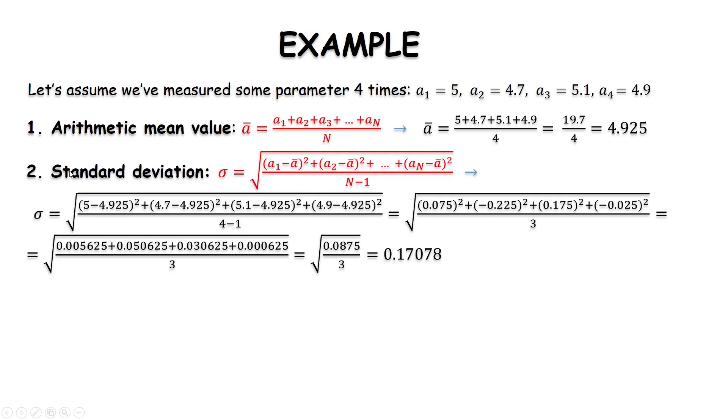Then, we will calculate the standard deviation using this equation. So, we simply put instead of a₁ we put 5 since a₁ is 5. Instead of a₂, we put 4.7 and then 5.1 and 4.9.